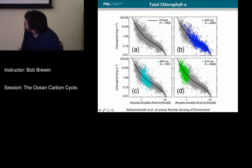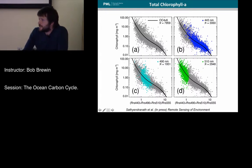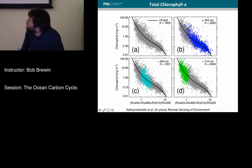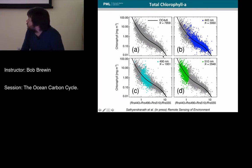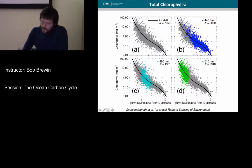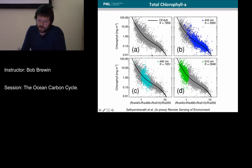This is the OCCCI in-situ dataset, showing in-situ chlorophyll concentration as a function of the ratio of blue to green light. When total chlorophyll concentrations are very low, there's a lot more blue light relative to the green. As we get to higher and higher chlorophyll concentrations, more blue absorption changes that ratio. The OC4 algorithm, which was until recently the default algorithm used by many space agencies for estimating chlorophyll, uses this maximum band ratio approach.